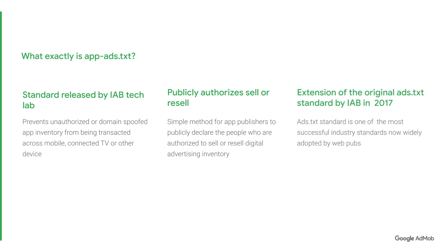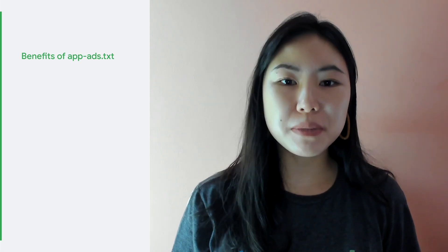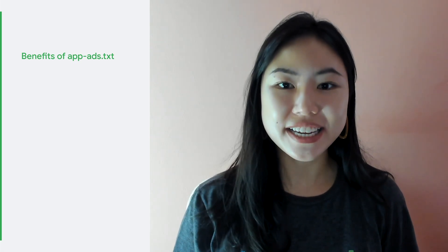Apex.txt is an extension of the original Apex.txt standard that was first published by the IAB in 2017. The Apex.txt standard is one of the most successful industry standards and is now widely adopted by web publishers. So, when should publishers use Apex.txt?